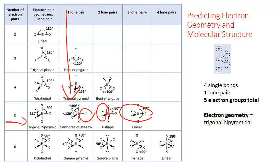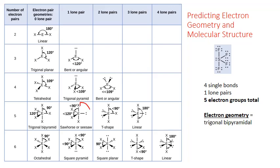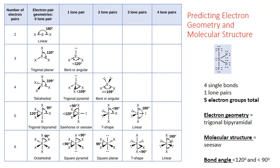So that influences what we call the shape — a seesaw. If you were to rotate it 90 degrees, you could see the legs down here with the plane of the seesaw running vertically. We have a seesaw shape with a bond angle of about 120 and 90 degrees, and that lone pair pushes the remaining atoms a little bit closer together.